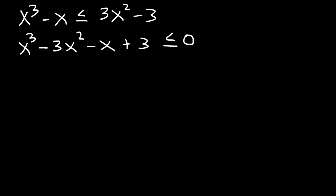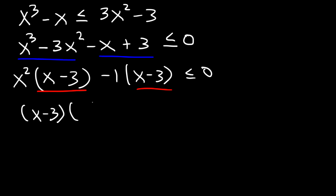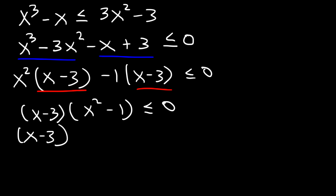Now we need to factor by grouping. Take out the GCF from the first two terms, which is x squared: x cubed divided by x squared is x, and negative 3x squared divided by x squared is negative 3. In the last two terms, factor out negative 1 to get x minus 3. Now factor out x minus 3 as the GCF: from the first term we get x squared, and from the second term negative 1, giving x squared minus 1. Using the difference of perfect squares, that factors as x plus 1 times x minus 1.